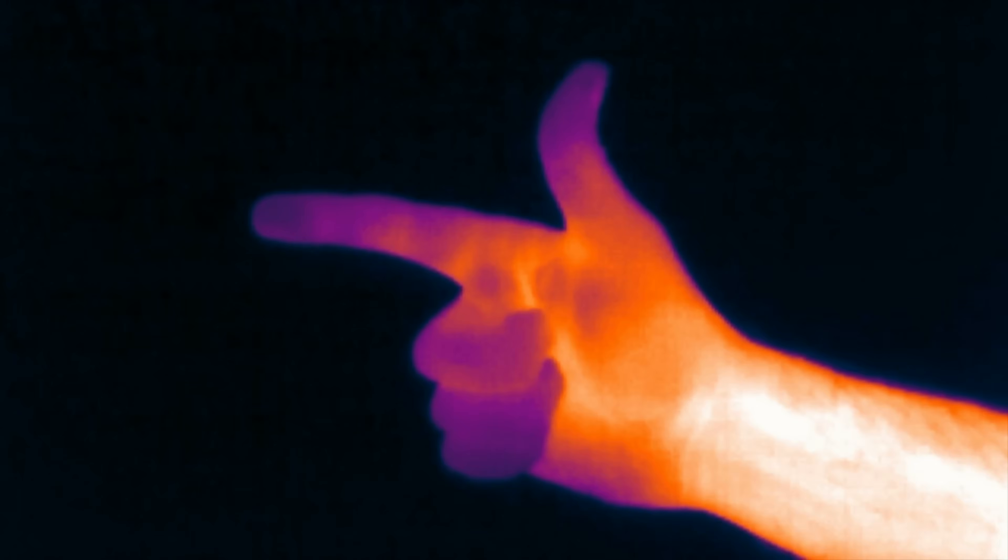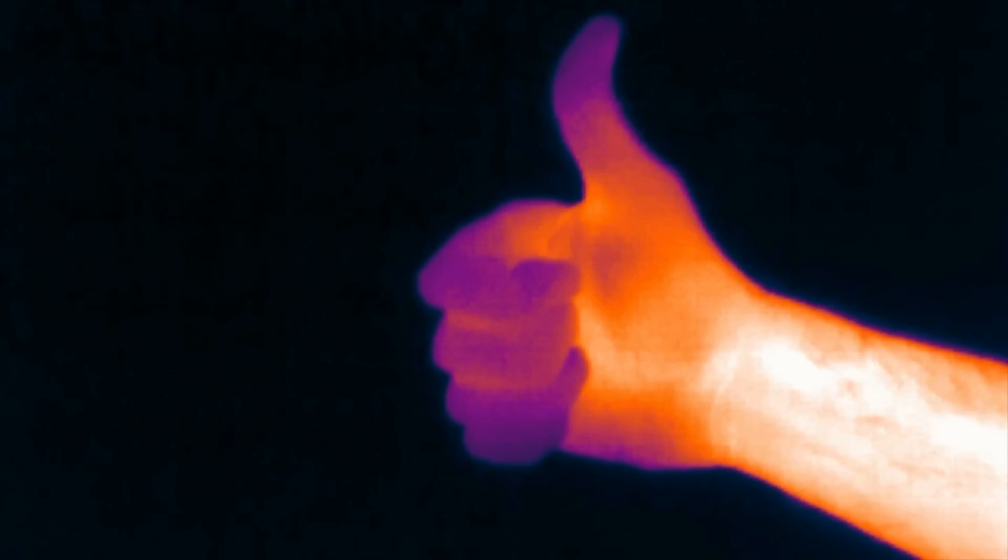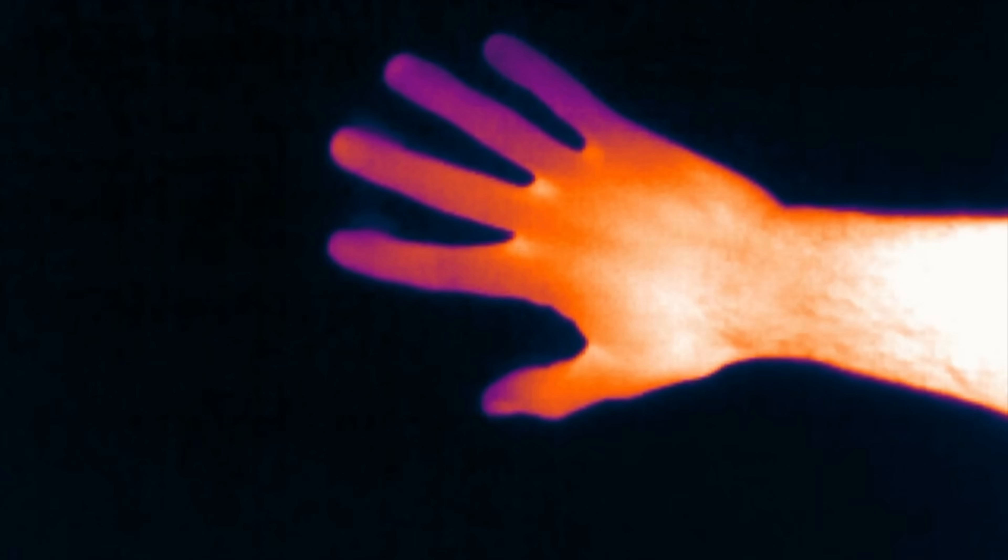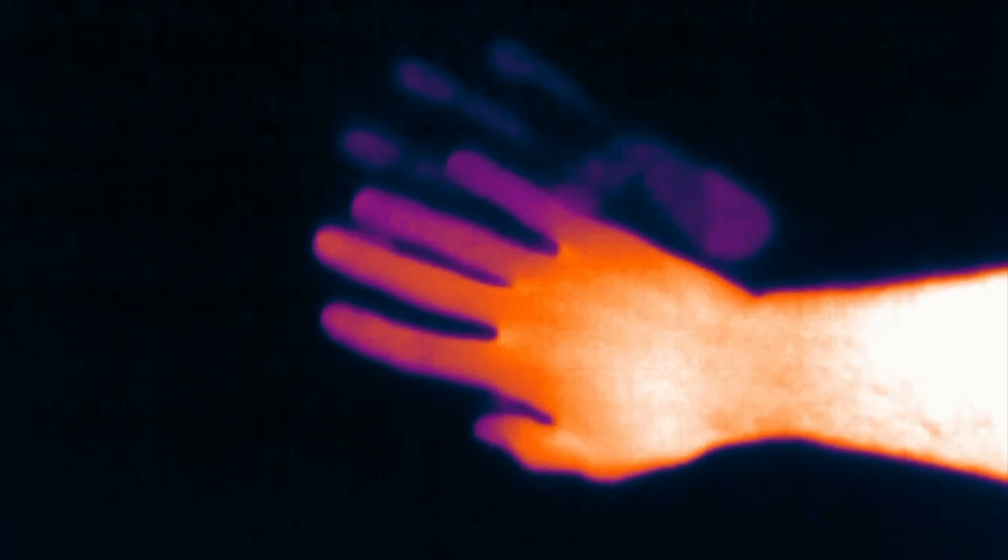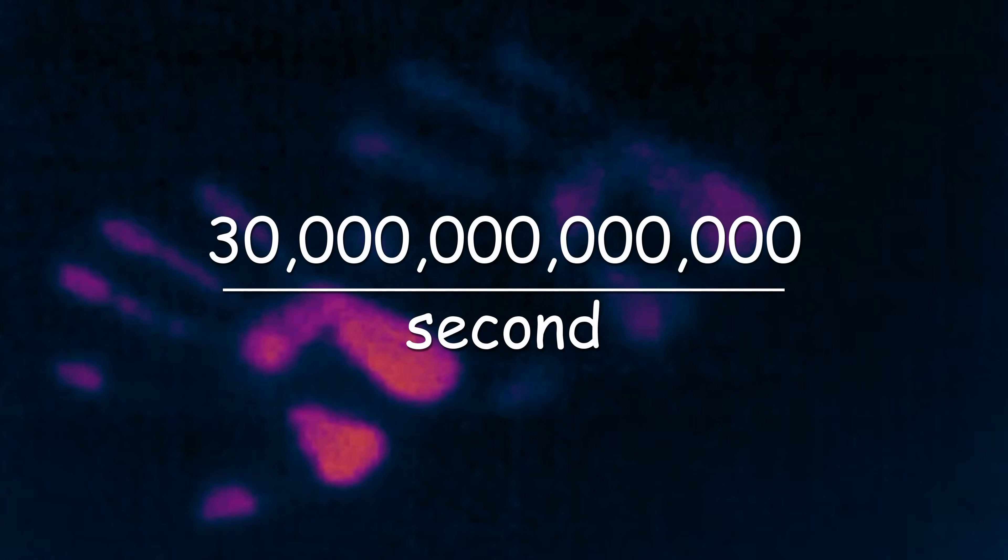But while you can't emit visible light by moving your entire arm around, the individual molecules that make up your arm don't have nearly as much mass and inertia to overcome, so they're able to oscillate more freely. And since heat is just movement at a molecular scale, the heat from your body brings your molecules much closer to emitting visible light, which can be detected with an infrared camera. Assuming you're not hypothermic right now, the molecules in your body are oscillating around 30 trillion times per second.